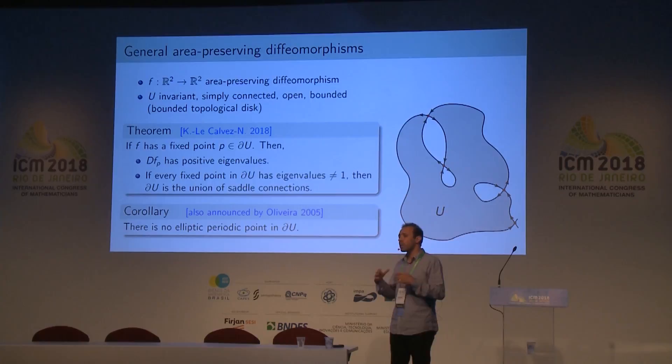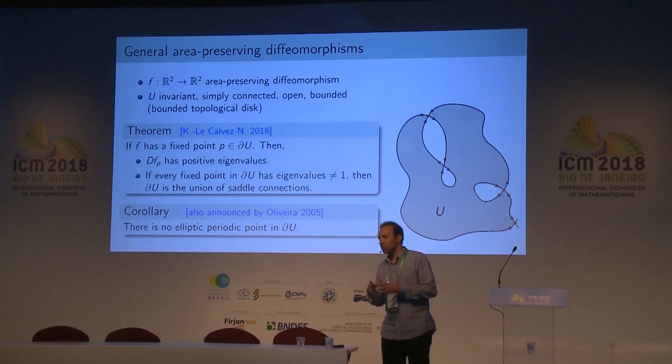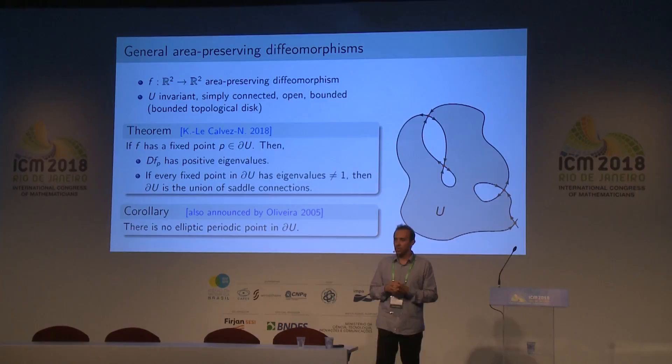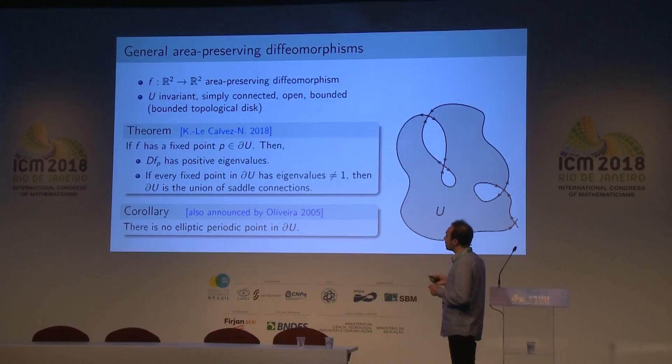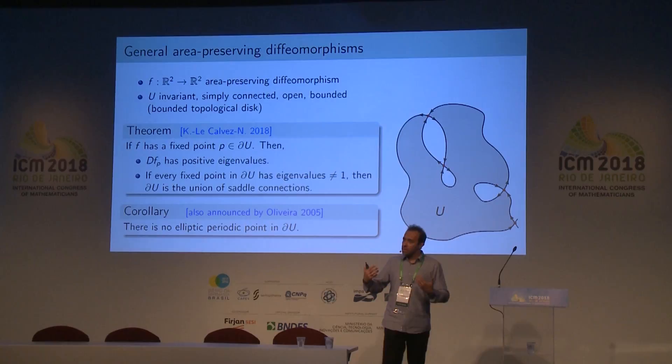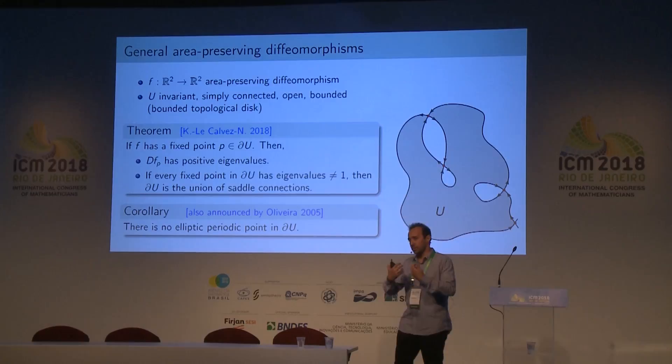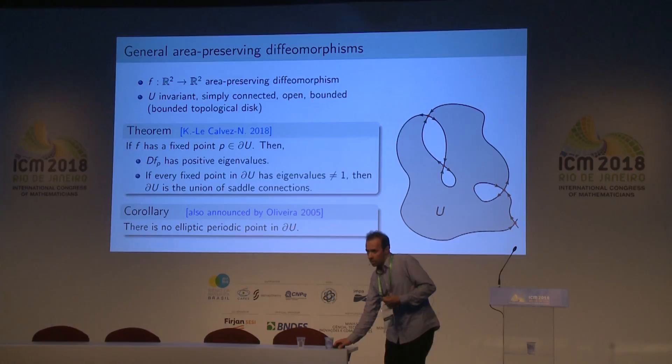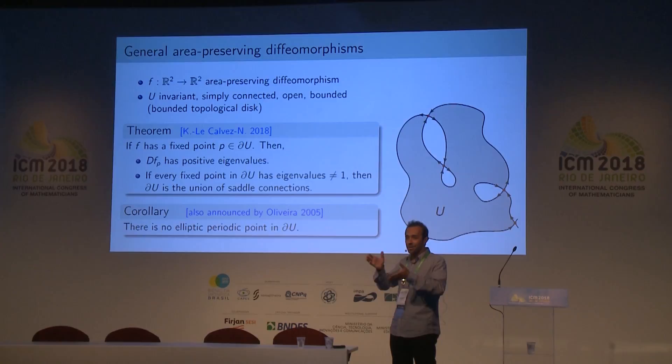We consider homeomorphisms on surfaces and try to understand in general the boundary of invariant open sets dynamically. We see a very strong relation between both the dynamics on the boundary and the topology of the boundary. I would like to ask Andres to continue the talk, considering the main subject.